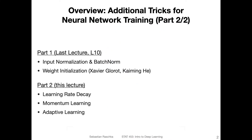In the past couple of weeks, we already covered a bunch of topics related to improving neural network training. For example, we talked about regularization to reduce overfitting — examples included L2 regularization, also called weight decay, and dropout. Then last week, we discussed normalizing inputs and hidden layer activations, such as input standardization and batch normalization. There were also tricks like weight initialization schemes — Xavier Glorot and Kaiming He — which can also improve neural network training.